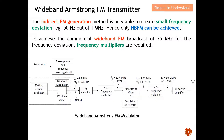Let's do a quick discussion on the wideband Armstrong FM transmitter. The indirect FM generation method is only able to create a small frequency deviation — for example, a deviation of 50 Hz out of 1 MHz — so only narrowband FM can be achieved. To achieve the commercial wideband FM broadcast of 75 kHz frequency deviation, frequency multipliers are required. This diagram shows the wideband Armstrong FM modulator, which uses two frequency multipliers.